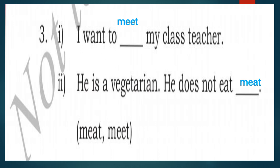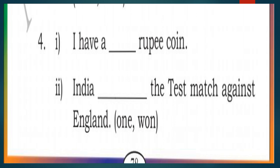Question four: first blank: Ahava __ rupee coin. Second: India __ the test match against England. The words are O-N-E (one) and W-O-N (won). Answer: Ahava ONE rupee coin. India WON the test match against England.